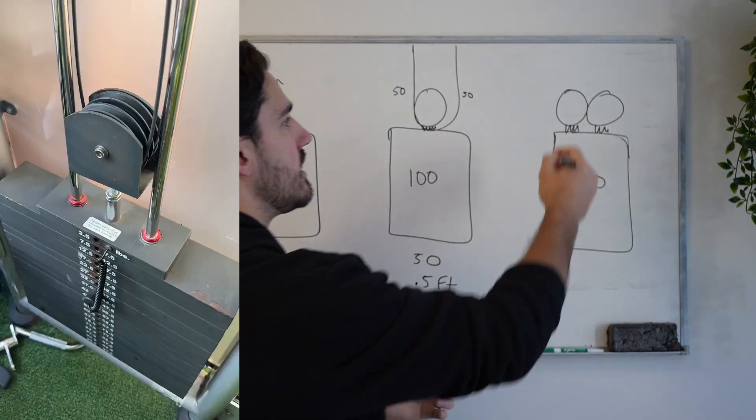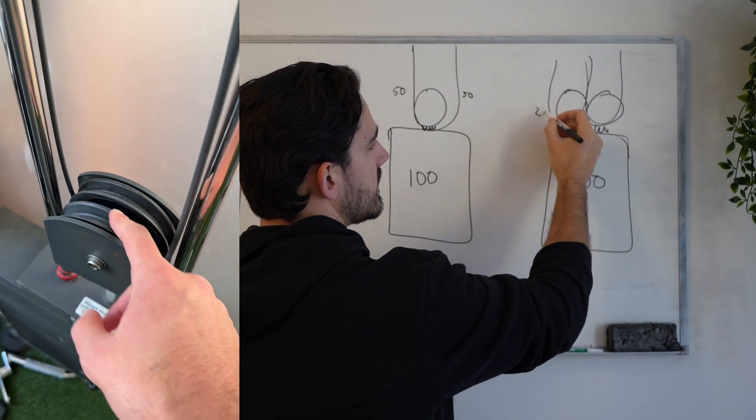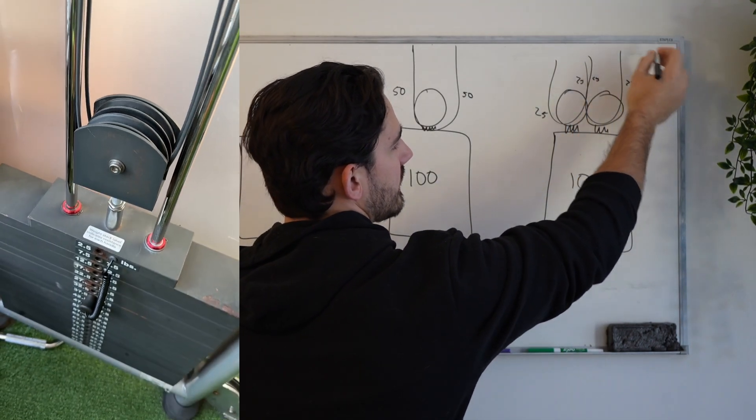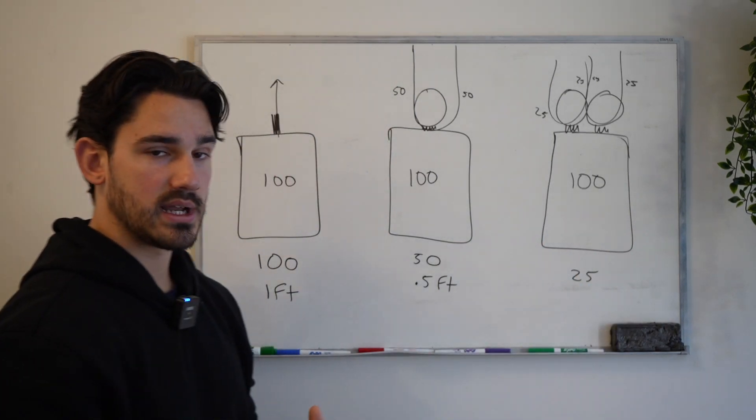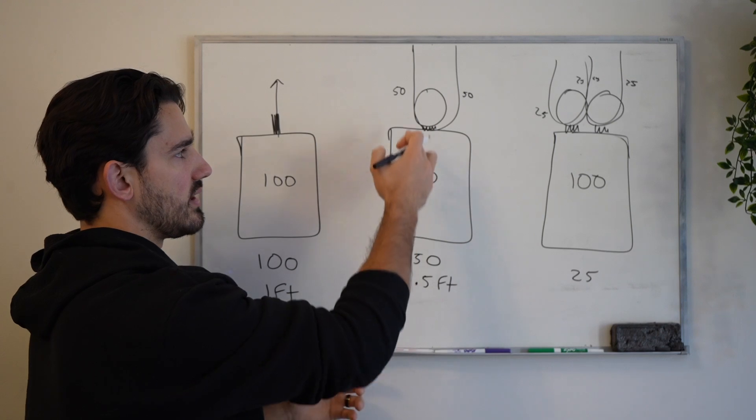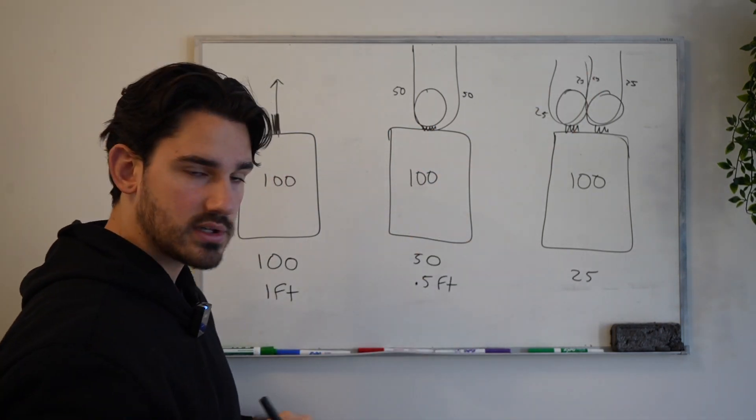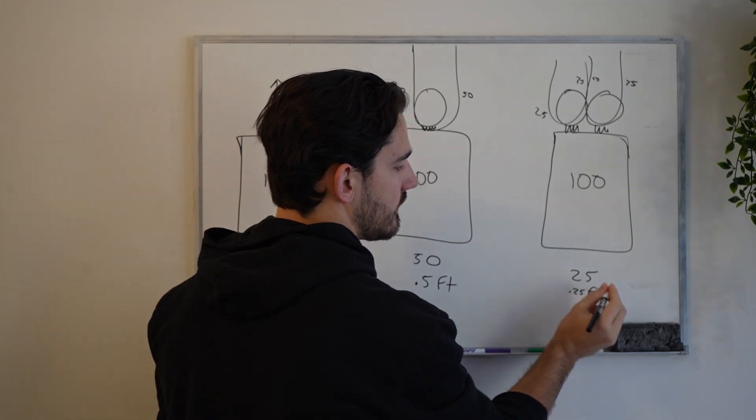You're starting to see a pattern here. Now what happens if we double the pulleys, we have twice the amount of cables going upward here, and so in each of these, we have 25, 25, 25, 25, and eventually, we output to the handle 25 pounds. And as you might have already predicted, what happens if we have one pulley? It moves half the distance. Well, if we pull this handle a foot, it will actually move 0.25 feet.